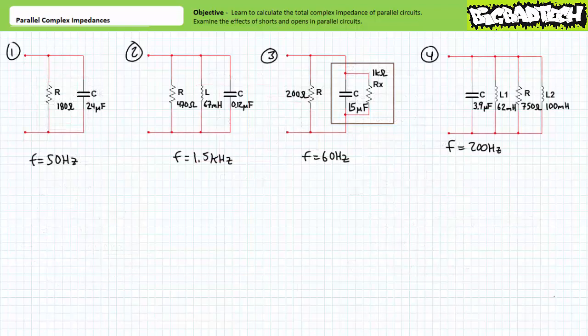That's about enough preliminary discussion about parallel complex impedance. Let's put your understanding of parallel complex impedance calculations to the test with this example set. Given these parallel circuits, calculate the resulting total impedance. Remember, direction matters, and one must calculate complex impedance for reactive elements like capacitors and inductors at the frequency of interest. The only way to get this wrong is to fail to account for direction or forget to perform complex impedance calculations.